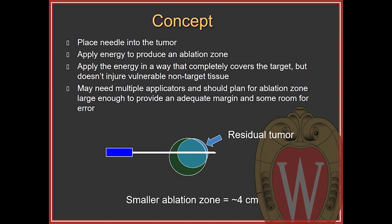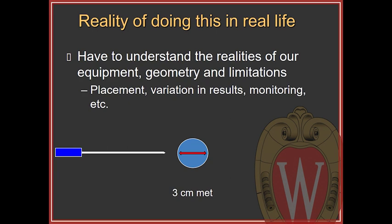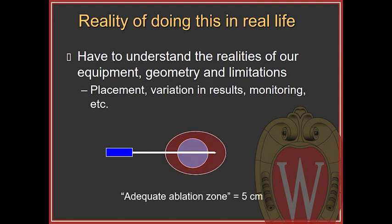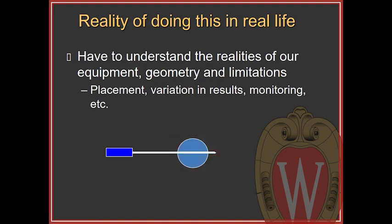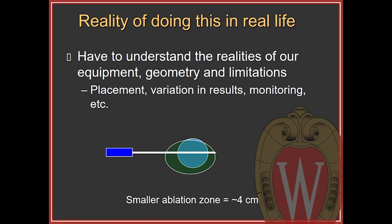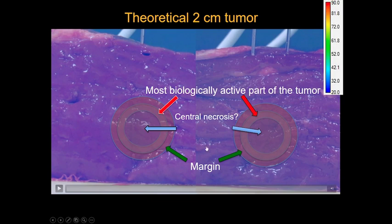If you choose too small an ablation zone it's very easy to have residual tumor and fail your treatment. This is by far the most challenging portion of the procedure. You also have to understand the realities of equipment geometry: ablation zones are usually not circular but ovoid, so the adequate ablation zone really needs to be sufficient in the short axis. Just like with carpentry — measure twice, cut once — you must plan an adequate ablation zone to get the treatment you want.